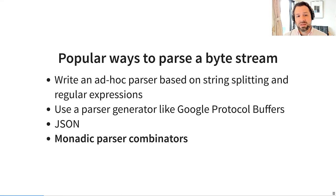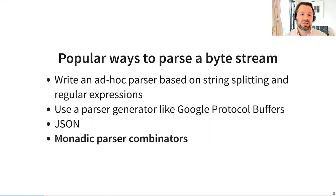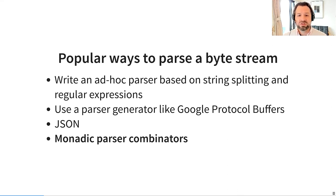Use JSON — again, this obviously only works if the input is JSON. The reason why such a huge amount of network traffic is JSON is exactly because reading a byte stream is difficult, and good JSON parsers already exist for every language. People would rather mangle their data into JSON than write a custom byte stream parser. And lastly, monadic parser combinators. I will try to convince you that monadic parsing is the best method for parsing any arbitrary input byte stream, and this is always the first method you should try when reading a byte stream from over the process input boundary.